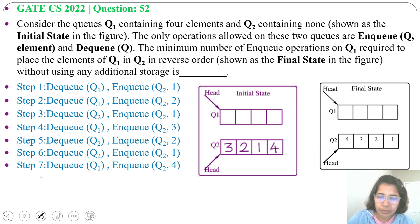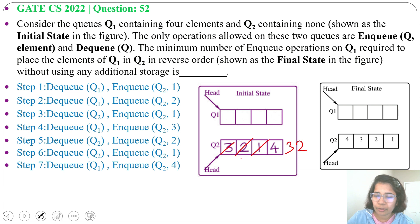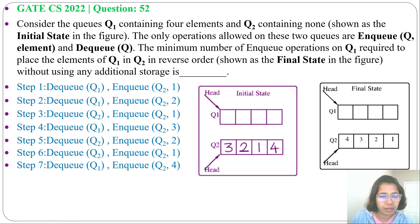We DQ from Q2 and NQ at Q2, again DQ from Q2 and NQ at Q2, then another DQ from Q2 and NQ at Q2. After these three operations we get Q2 as 4, 3, 2, 1.